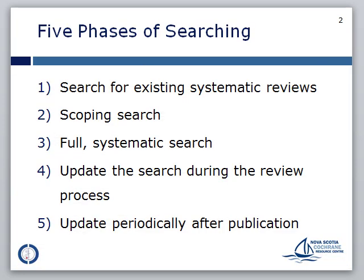The first step for conducting a good search is to take a look for existing systematic reviews, either directly addressing your question or related to one or more aspects of your question. The second step involves carrying out a scoping search to develop your search strategy. Next, you will conduct the full systematic search using multiple sources.